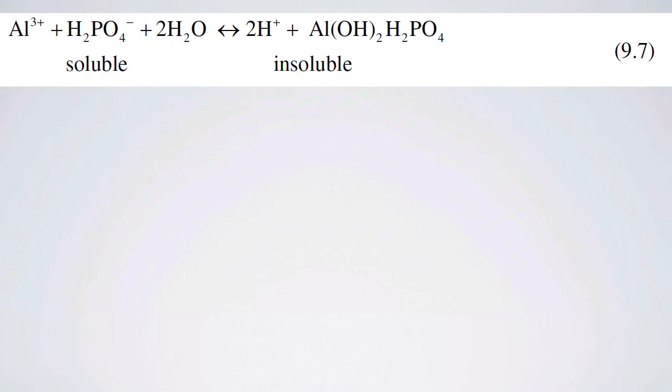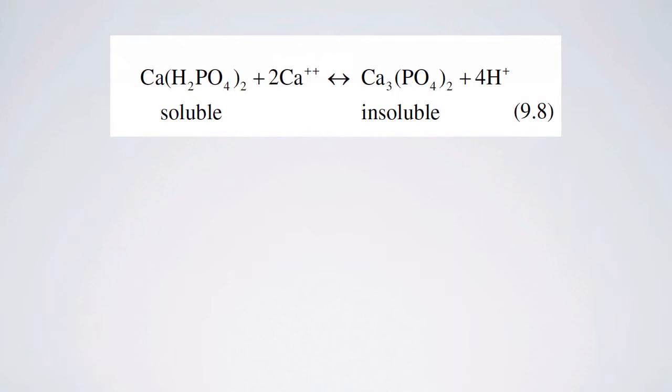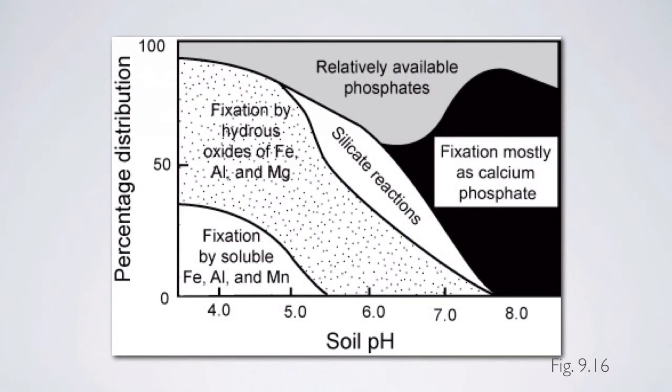Because it forms insoluble precipitates, this is a way that phosphorus availability can decline. It's important to know that this is going to be pH dependent. Especially at low pH, you can form insoluble precipitates. Not only can phosphate react with aluminum, but also you can have insoluble calcium-containing precipitates. So there's a number of cations that phosphate can react with that are relatively insoluble. The abundance of these is going to differ as pH changes.